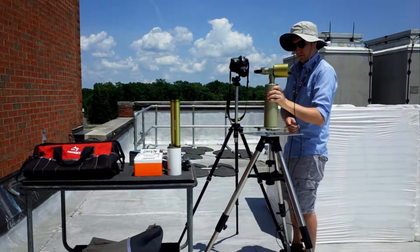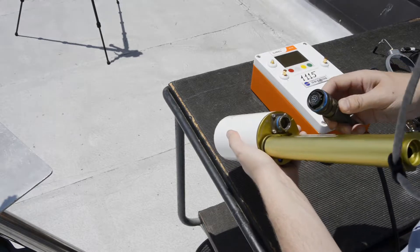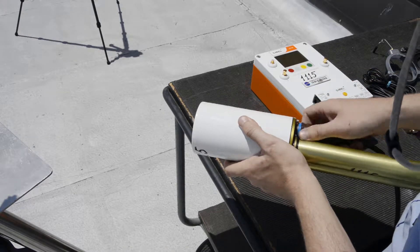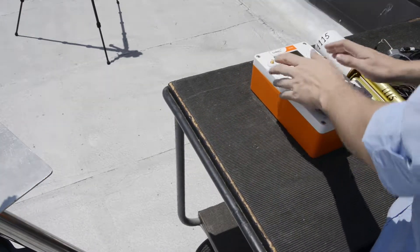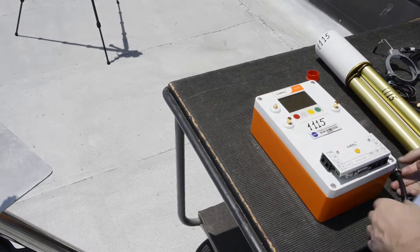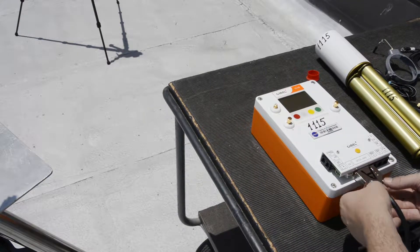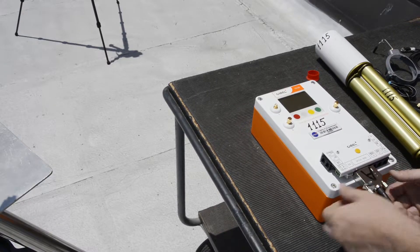Place the robot on the tripod in any orientation. Then connect the sensor head cable. To do this, align the notches and rotate the barrel connector until it clicks. Press the connector panel onto the front of the control box until it clicks. Connect the sensor head cable to the connector panel and tighten the two screws.